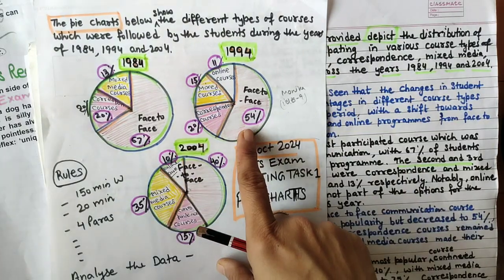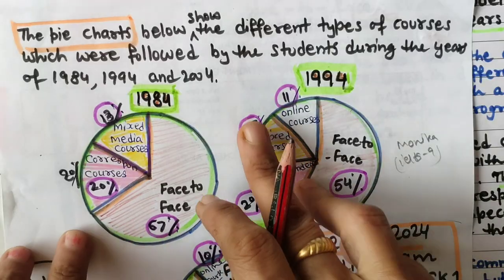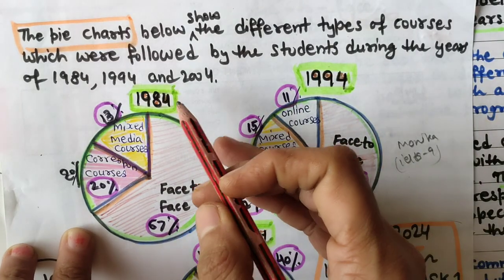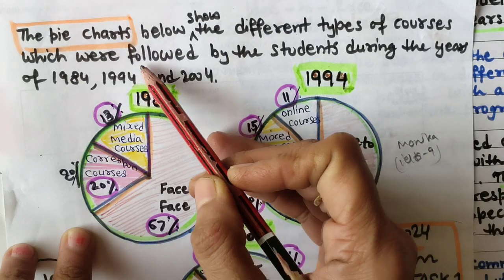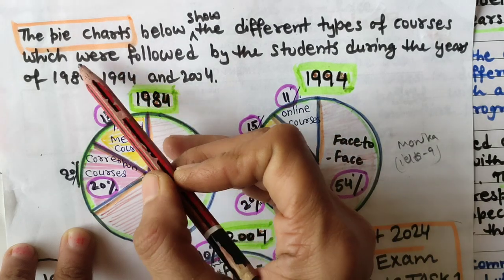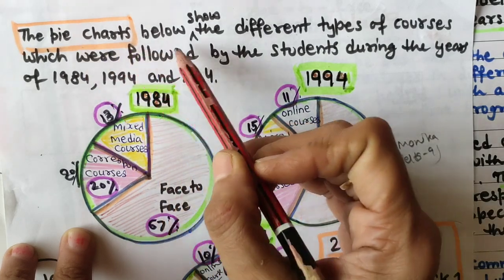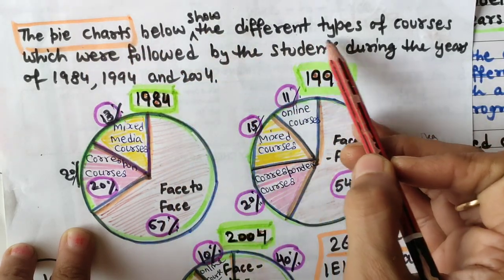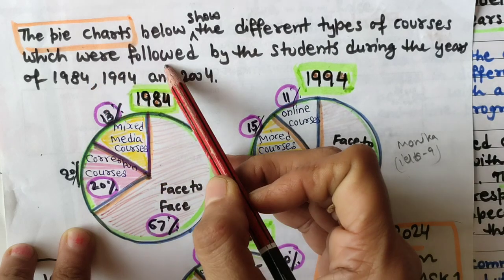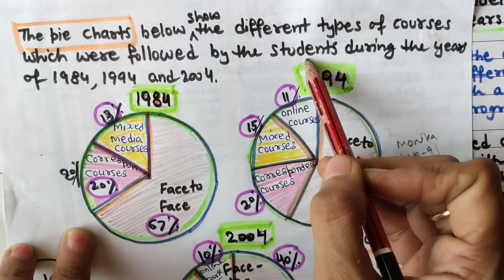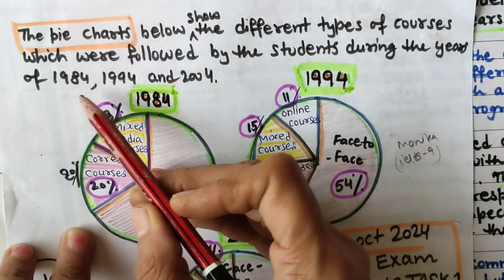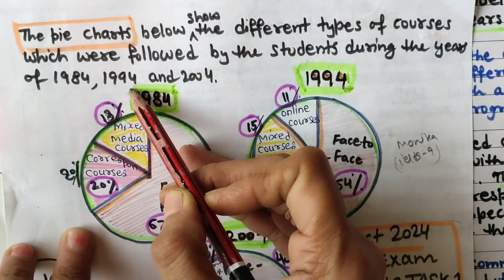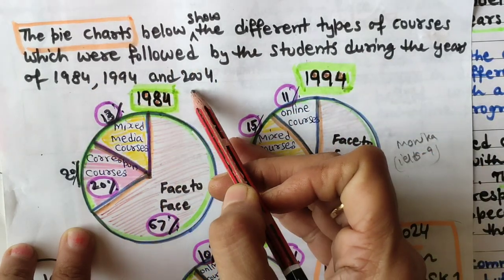After getting the question statement, the first thing to do is read it carefully. The question reads: 'The pie charts below show the different types of courses which were followed by the students during the years of 1984, 1994, and 2004.'